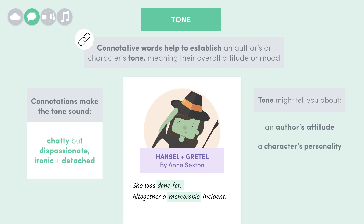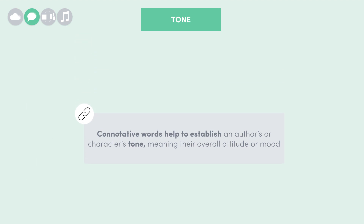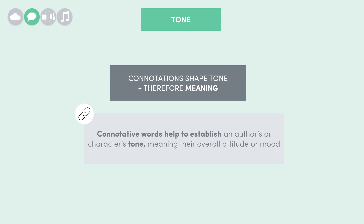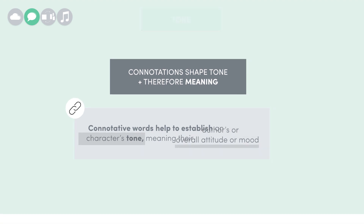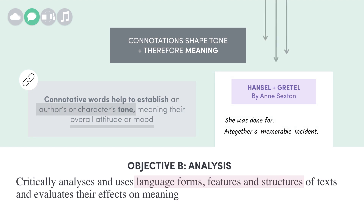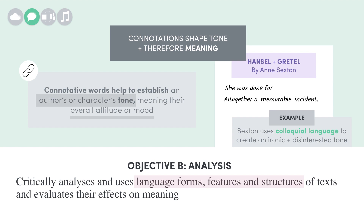Tone might tell you about a character's personality, or it might tell you about a character's attitude towards something. As they say, it's not what you say, it's how you say it. So basically, we should be thinking about how connotations can shape tone, and therefore meaning, in a text. Both will be really important in shaping the author's or a character's attitude towards something, which will then help us understand what an author is trying to say. In our example, Sexton uses colloquial language to create an ironic and disinterested tone.